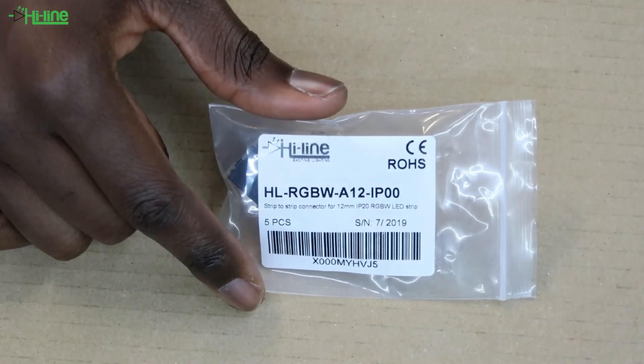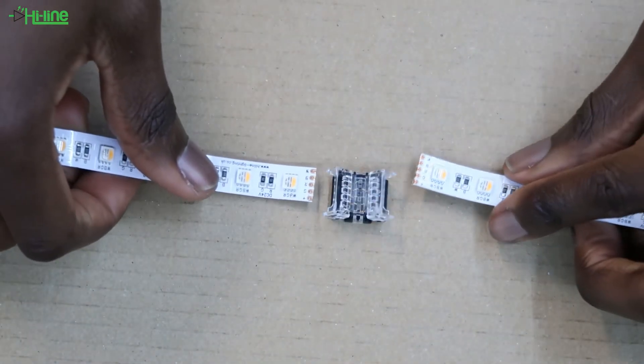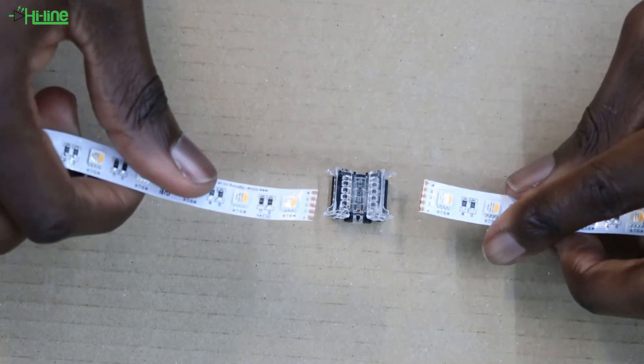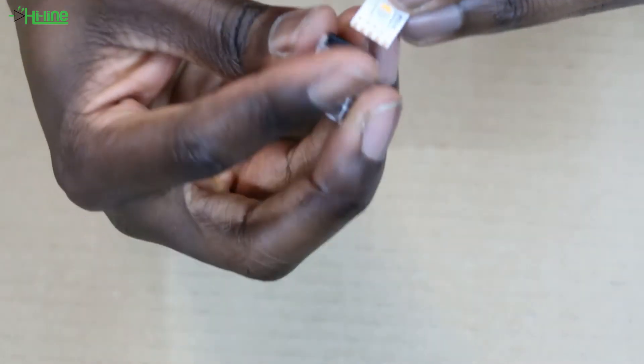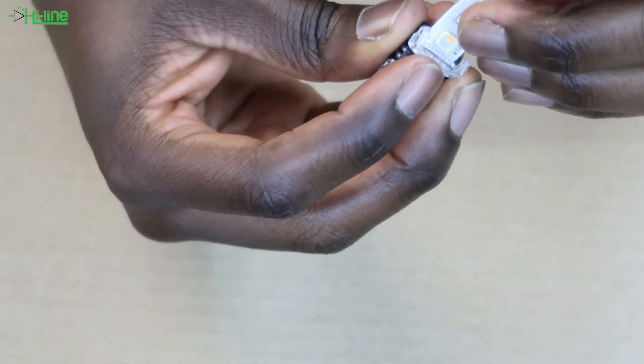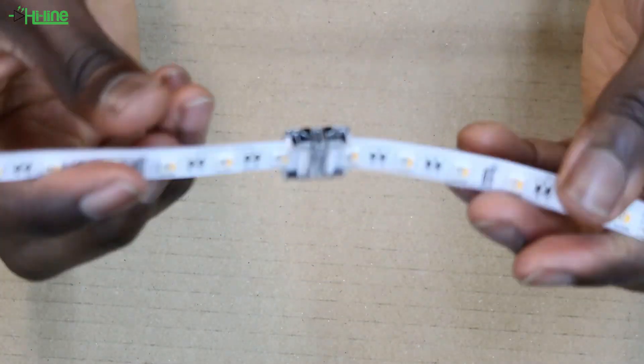We also have available our 12mm RGBW strip to strip connector. This connector can help you if you have two cuts of LED strip that you're trying to join together. All you have to do is place the LED strip on each side of the connector, just make sure they have the correct polarity before closing the connector. Once you've done that, we recommend to test each channel before completing your installation.